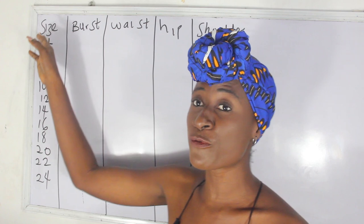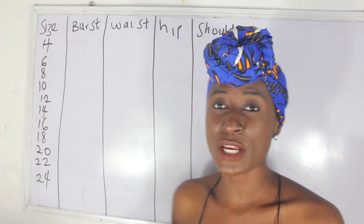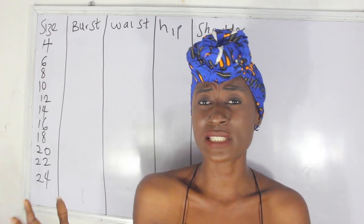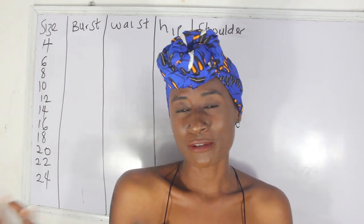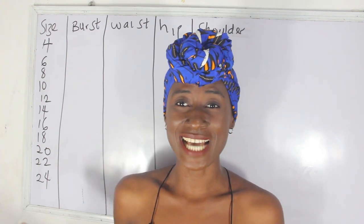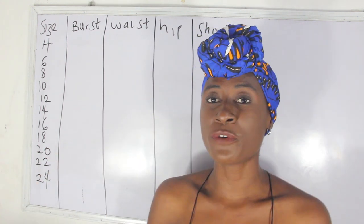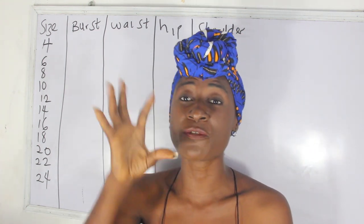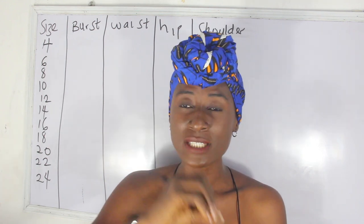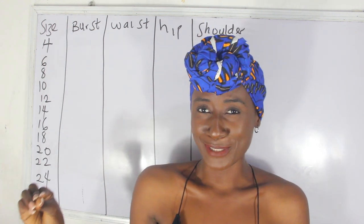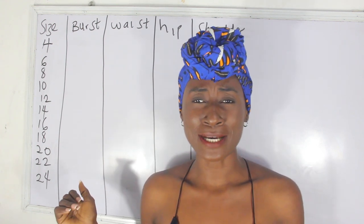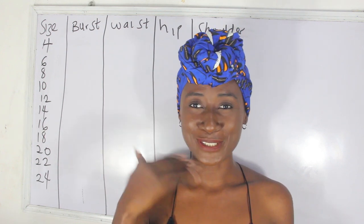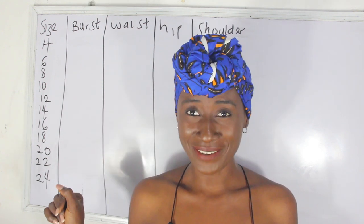Looking at this now, I have from size 4 to size 24, which is a whole lot. Even size 24 covers a bust area of 50-something inches, which covers basically all the sizes for female size charts. For this first part we have bust, waist, hip, and shoulder measurements — the first batch.